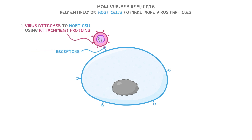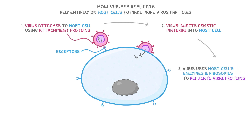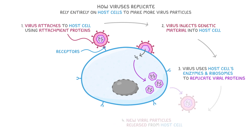These proteins match up with specific receptors on the host cell surface, and once they bind, the virus injects its genetic material into the host cell. Then, the virus uses the host cell's enzymes and ribosomes in order to replicate its viral proteins, and as a result it creates many new viruses.